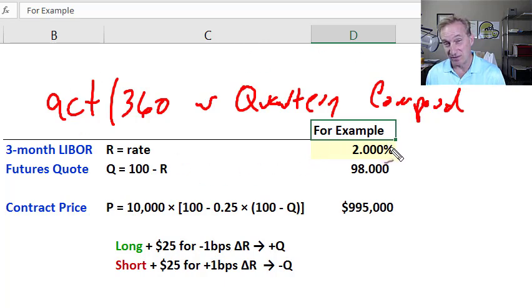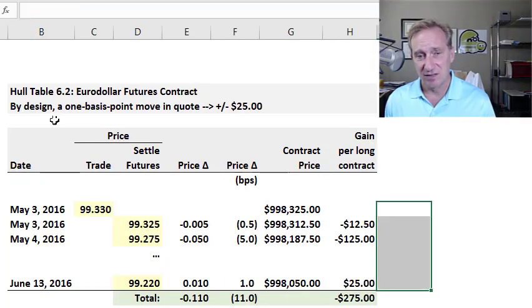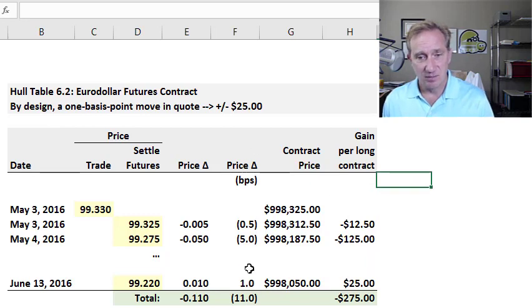This Eurodollar futures contract embeds these assumptions as part of its specification: day count actual 360 with quarterly compounding. Sometimes we need to make those translations. With that understood, here is Hull's table 6.2.